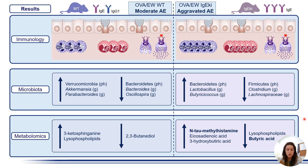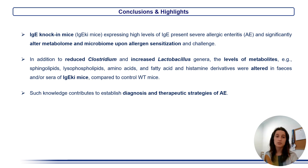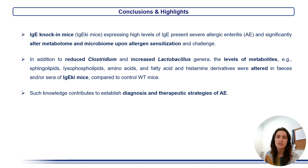Seroamphysis of aggravated mice showed increased levels of n-thalmethylistamine and reduced levels of butyric acid, which was complemented at the genus level with reduced Clostridium and increased Lactobacillus. Our results suggest that high IgE levels altered intestinal and systemic levels of endogenous and microbiota-associated metabolites in experimental allergic enteritis.